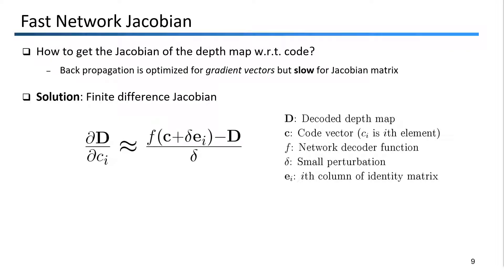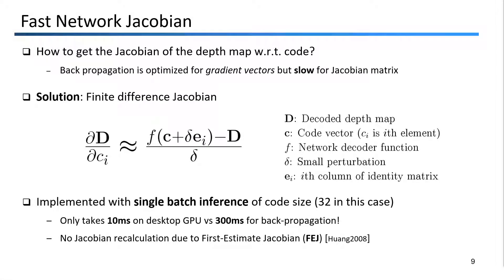Instead of backpropagation, we propose to compute the network Jacobians by the forward finite difference method. In the equation here, you can see that we take the derivative of the full depth map D by perturbing each axis of the code separately. Since calculating the derivative for each code element just takes a single forward pass of the decoder, we can implement this finite difference Jacobian with just a single minibatch forward pass, which in this case we need to use the same size of the code, which is 32 for our system. The finite difference Jacobian is pretty fast, only taking 10 milliseconds on a desktop GPU, while backpropagation takes 300 milliseconds or more. Also in the state estimator, due to our use of first estimate Jacobians, we can simply compute the Jacobian once per frame and store it for all future updates without any recalculation.